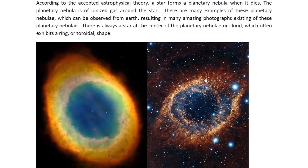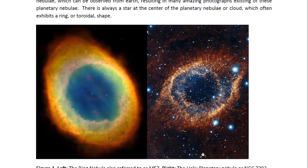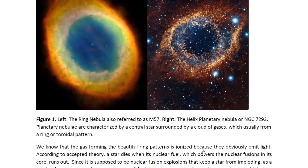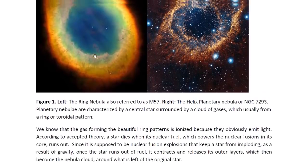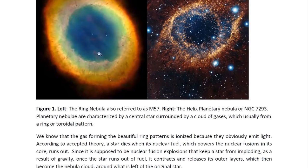There's always a star at the center of the planetary nebula or cloud, which often exhibits a ring or toroidal shape. As we can see here, this ring structure, or toroidal in shape. And this one here is called the ring nebula, or it's also referred to as M57.